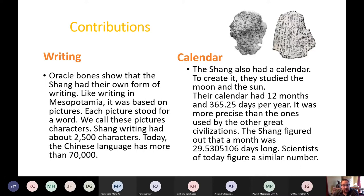The Shang also invented a calendar by studying the moon and the sun. Their calendar has 12 months and 365.25 days per year — more precise than those used by other great civilizations. The Shang figured out that a month is 29.53 days long, which is very close to what scientists calculate today. Very advanced for their time.